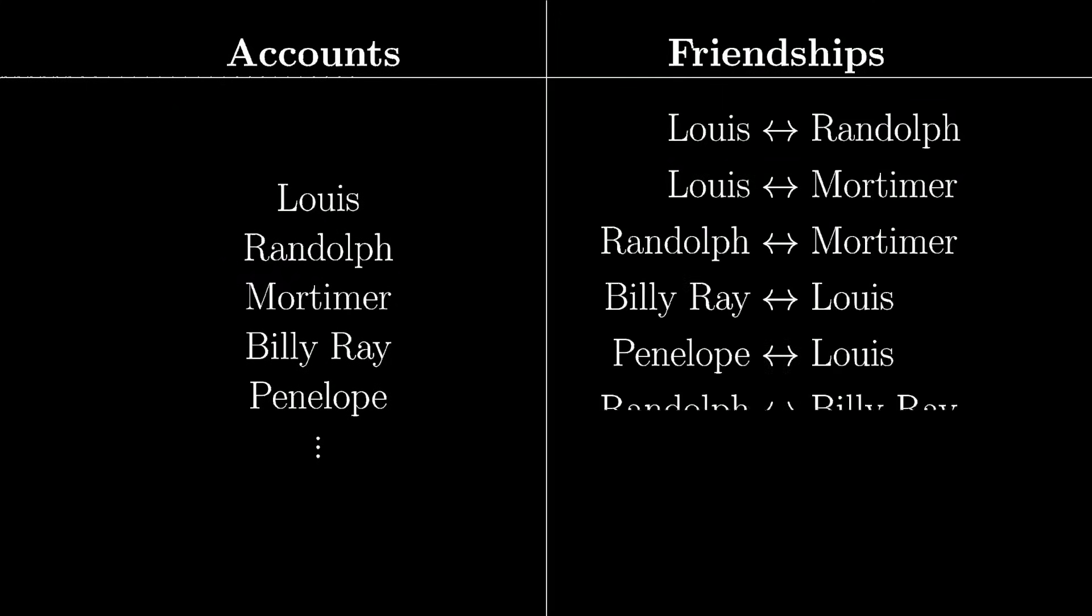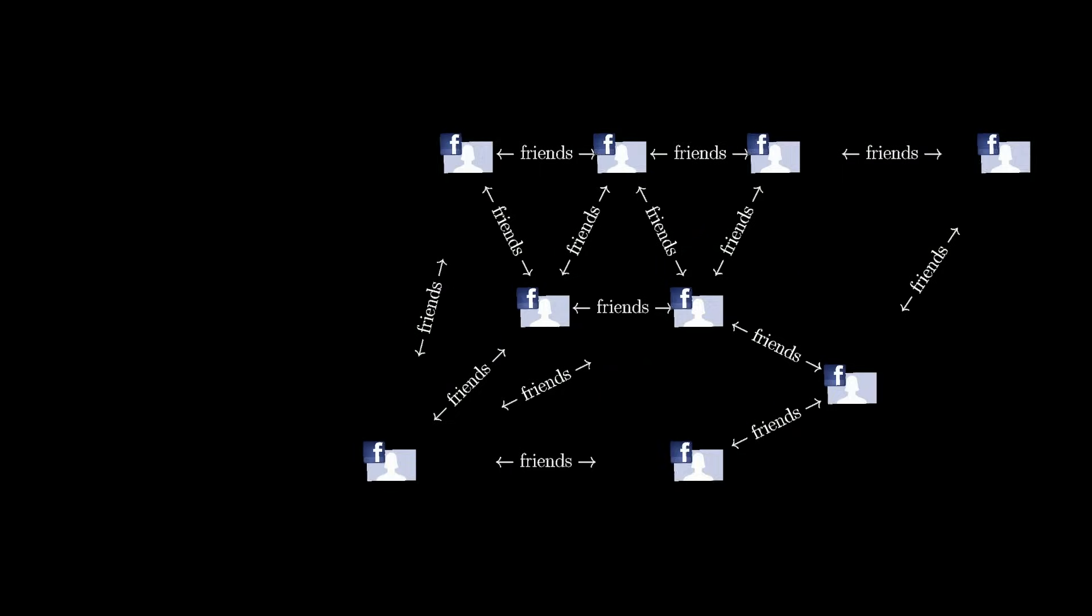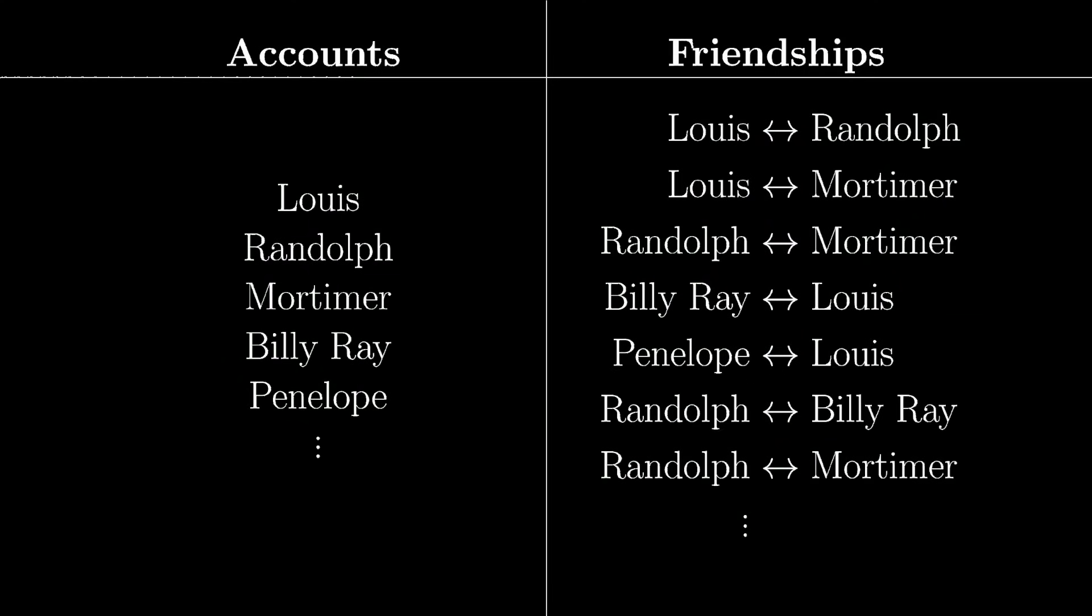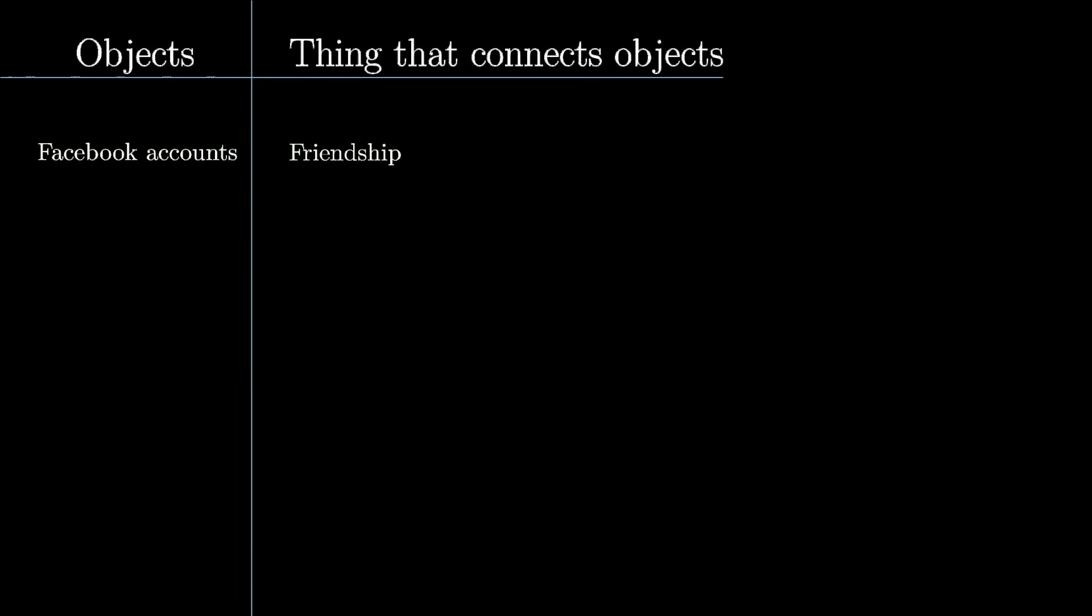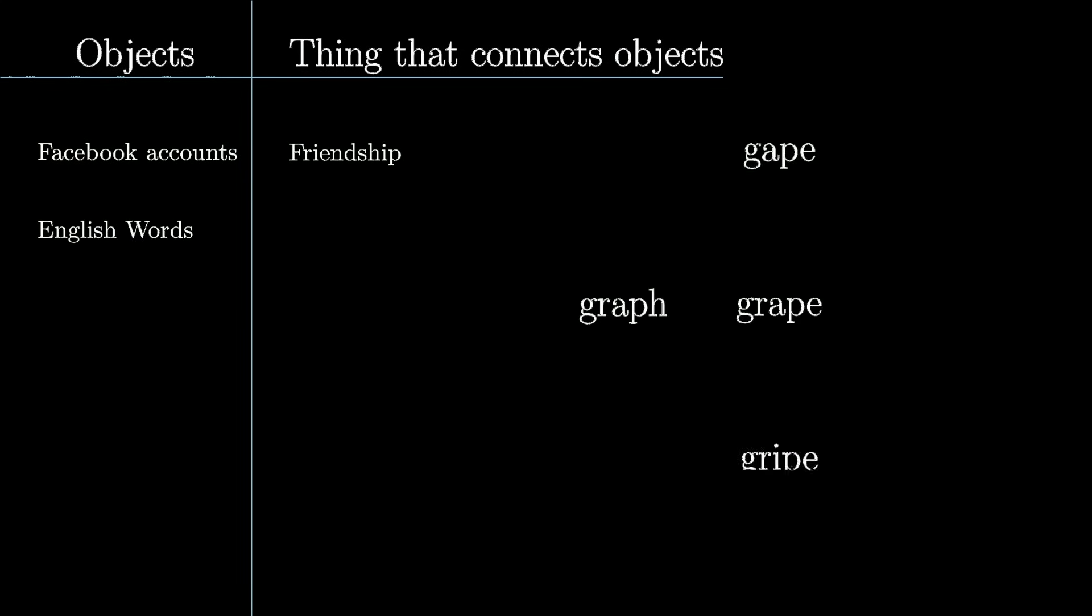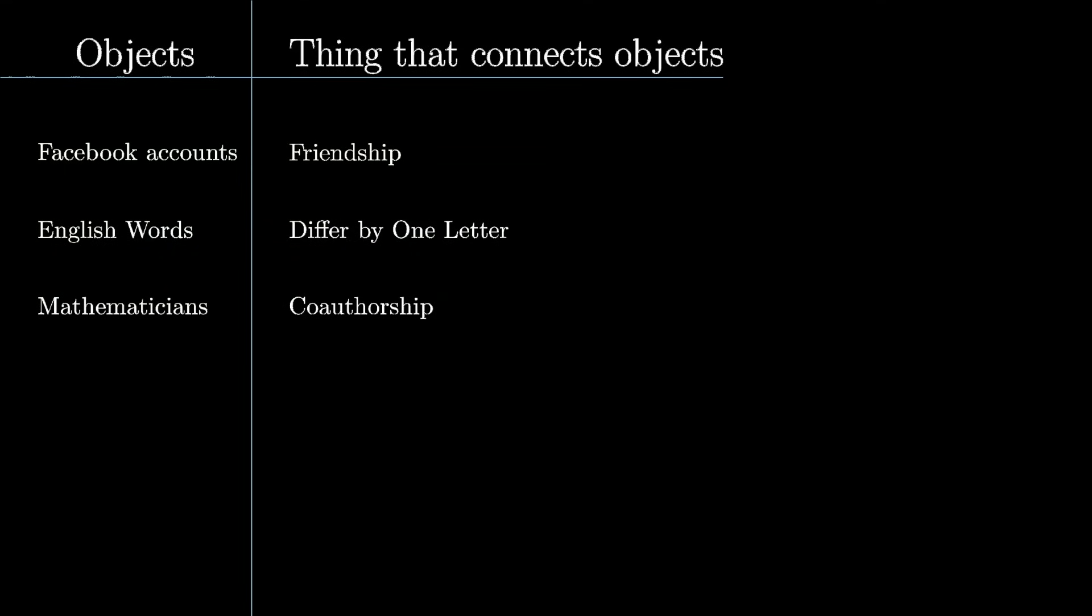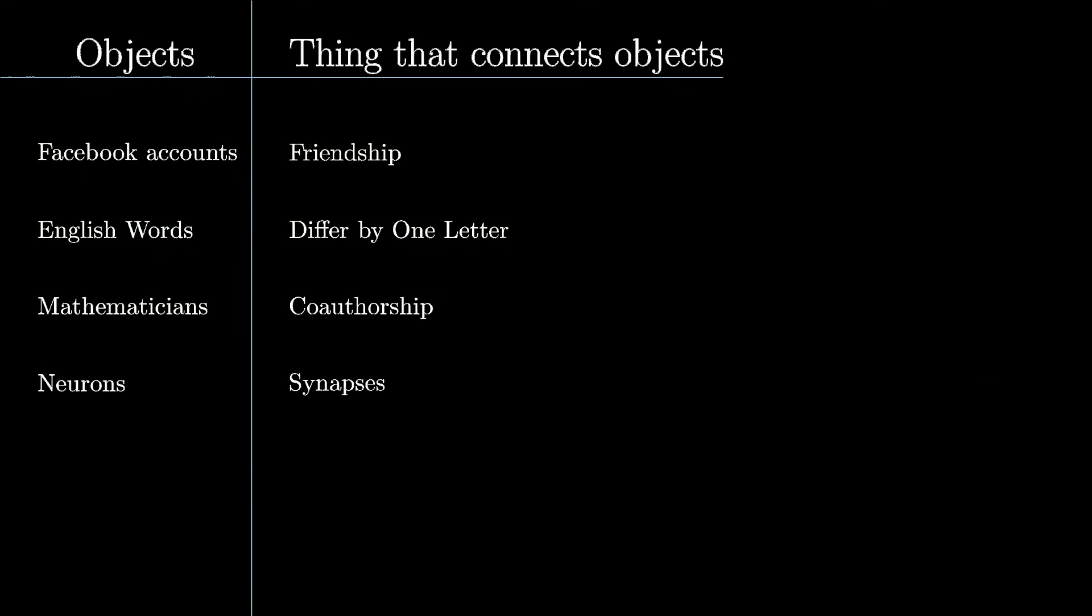For instance, Facebook stores an enormous graph, where vertices are accounts and edges are friendships. Although we could use drawings to represent this graph, the graph itself is the abstract set of accounts and friendships, completely distinct from the drawing. All sorts of things are undrawn graphs. The set of English words considered connected when they differ by one letter. Mathematicians considered connected if they have written a paper together. Neurons connected by synapses.